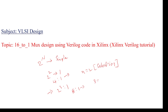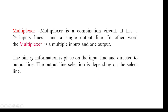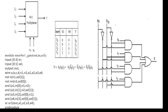For an 8 to 1 MUX, 3 selection lines are required. For a 4 to 1 MUX, n equals 2, so there are 2 selection lines. When the selection inputs are 0 0, we need to select I0. When the inputs are 0 1, we need to select I1. Based on the selection line values S1 and S0, we get the corresponding output.